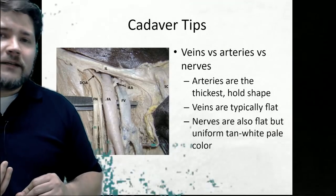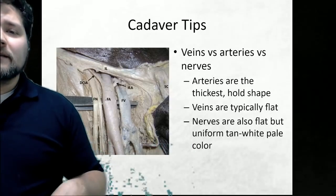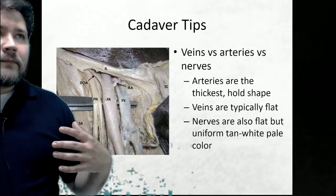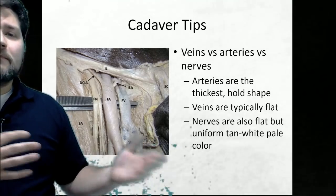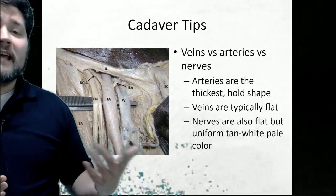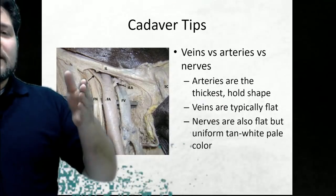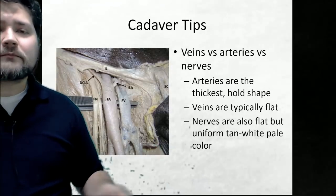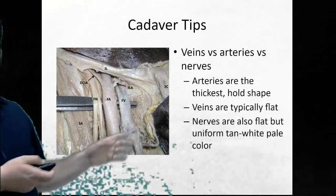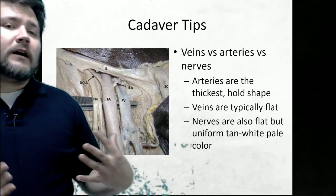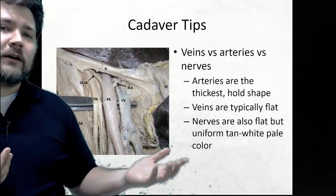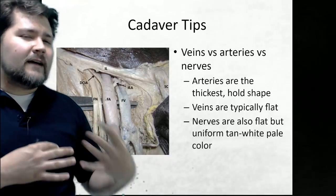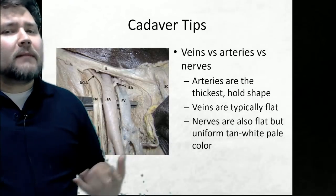When looking at cadaveric images, arteries are thick and hold their shape — a little more rounded. A useful mnemonic is VAN: vein, artery, nerve. The artery tends to be lodged in the center, the vein on one side, the nerve on the other — for example, the femoral vein, femoral artery, and femoral nerve follow this pattern. Veins are typically flatter with a slight bluish discoloration, while nerves are also flat but have a shine to them.